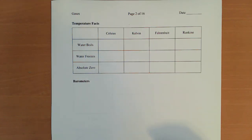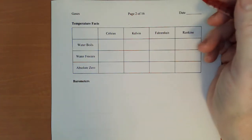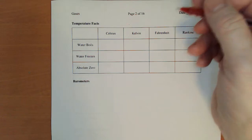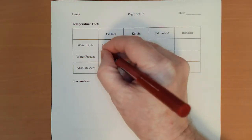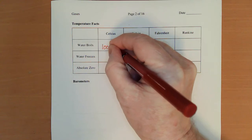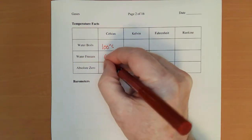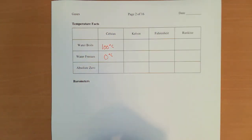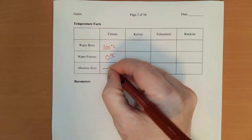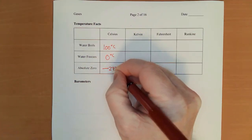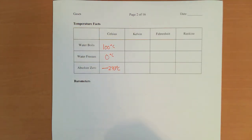Now, I want to collect some facts about water and temperature. Most of these are temperature facts. We're going to use water to understand them. And we're going to develop some temperature scales here. On the Celsius scale, water boils at 100 degrees Celsius. It freezes at 0 degrees Celsius. And our absolute zero is negative 273 degrees Celsius.